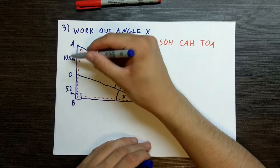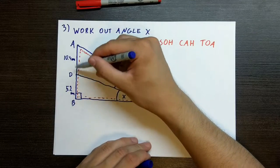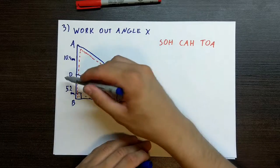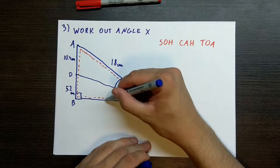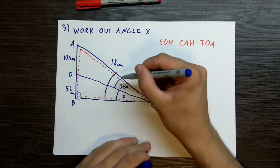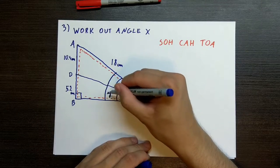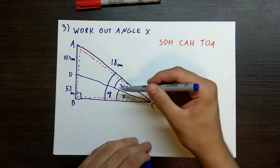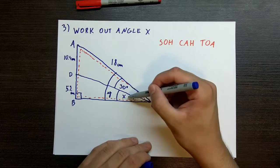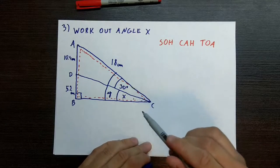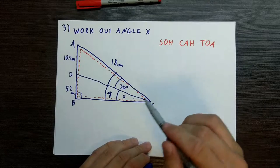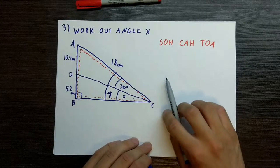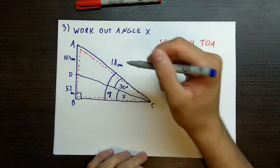What we are going to do is add these two values, which will give us the opposite. Here we have the hypotenuse. Using these two, we can figure out this angle right here — we are going to call it angle y. And then, once we know this angle, we can take away 30 degrees to find out x. We will go through it step by step, so don't worry. So without further ado, let's get started.